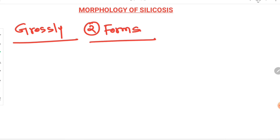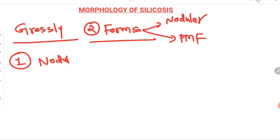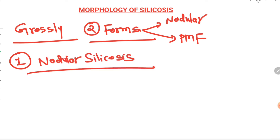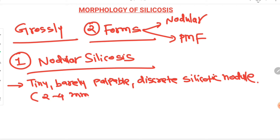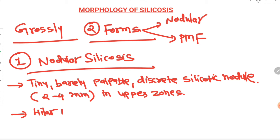Now let's see the morphology of silicosis. It can present in two forms: nodular variety, which is milder, or progressive massive fibrosis, which is dangerous. In nodular silicosis, there are small palpable discrete silicotic nodules over the lung surface, 2 to 4 millimeters in diameter, usually seen in the upper zone of the lung. Because of lung involvement, nearby hilar nodes can also be enlarged through the lymphatics.